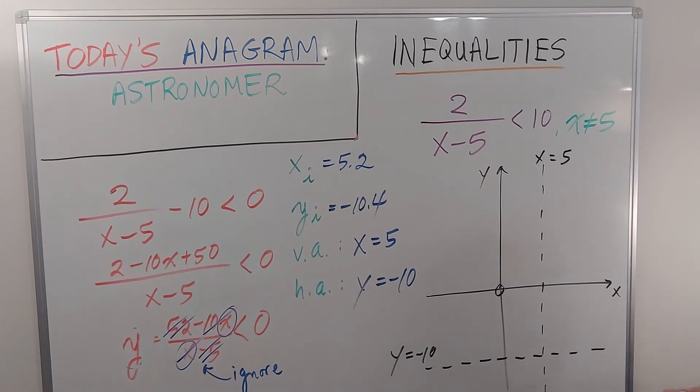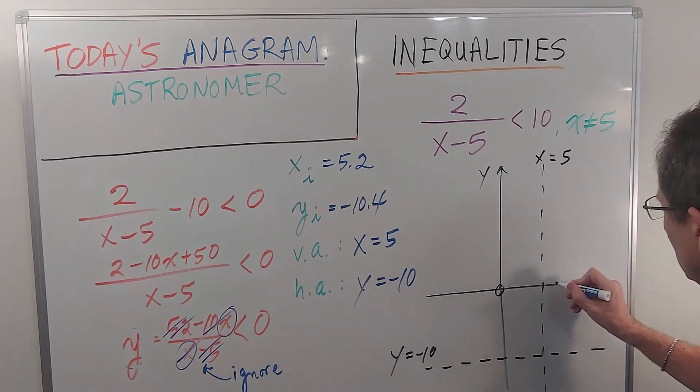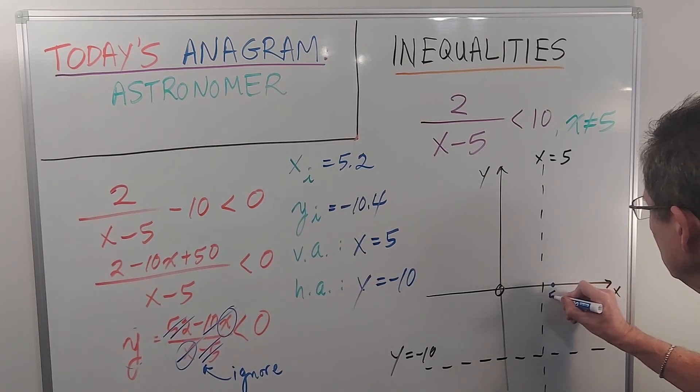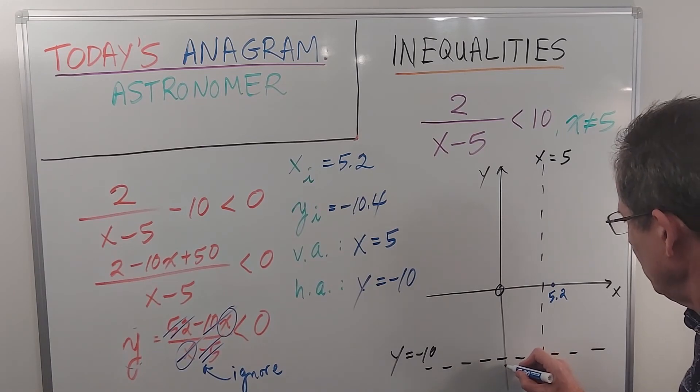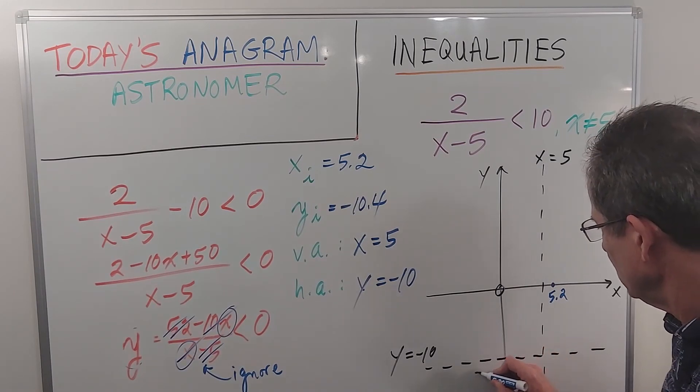The x-intercept is 5.2, so just a little bit to the right. The y-intercept is negative 10.4, so a little bit below the horizontal asymptote.